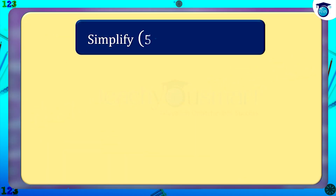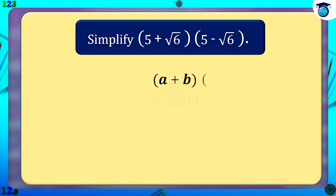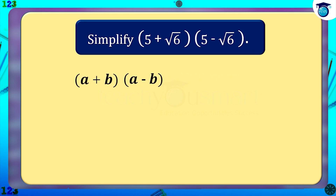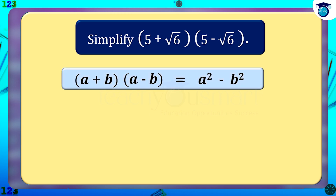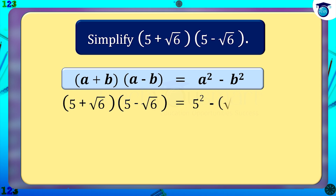Next, simplify (5 + √6) multiplied by (5 − √6). This is of the form (a+b)(a−b). We know that (a+b)(a−b) equals a² minus b². Therefore, (5+√6)(5−√6) equals 5² minus (√6)² equals 25 minus 6, which equals 19.